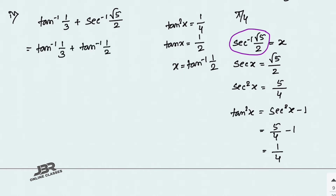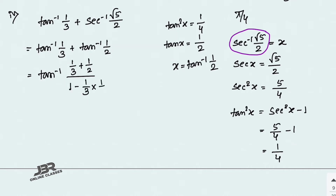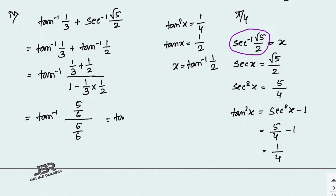Now applying the formula tan⁻¹(x) + tan⁻¹(y) = tan⁻¹((x+y)/(1−xy)): numerator is 1/3 + 1/2 = 5/6; denominator is 1 − (1/3)(1/2) = 5/6. So tan⁻¹(5/6 ÷ 5/6) = tan⁻¹(1). Since tan⁻¹(1) = π/4, the answer is π/4. Proved.